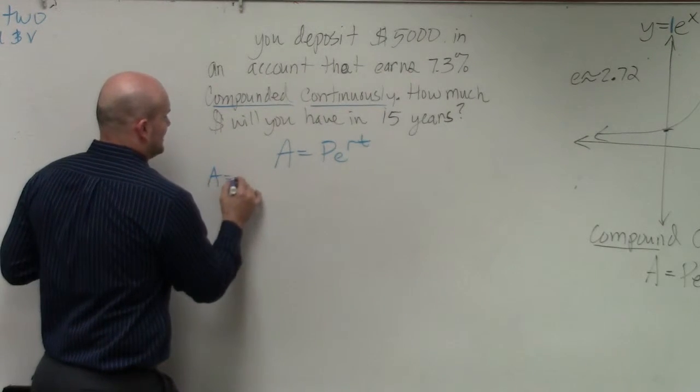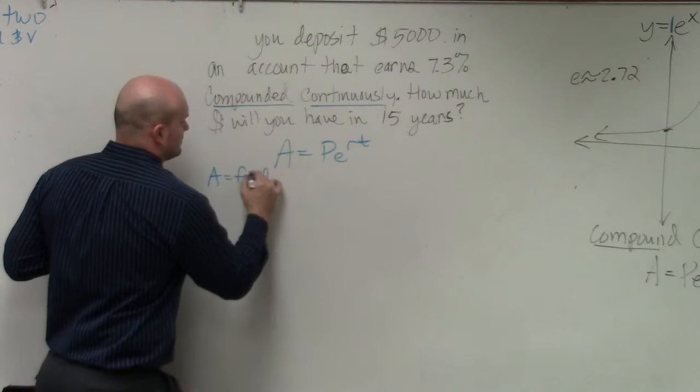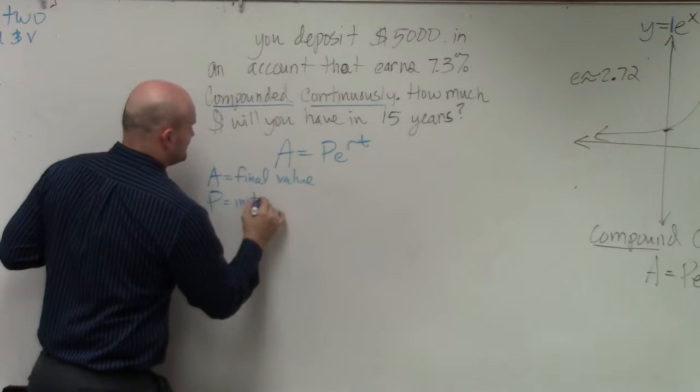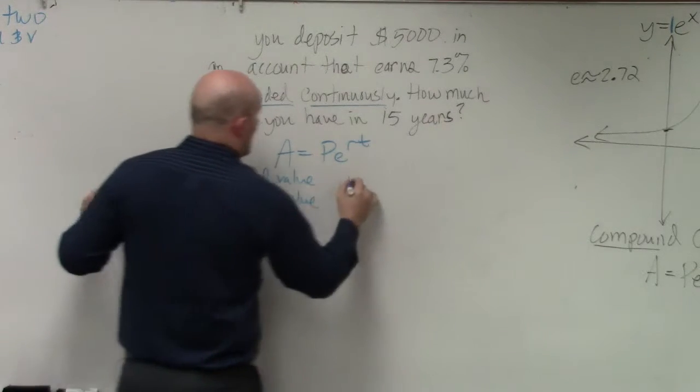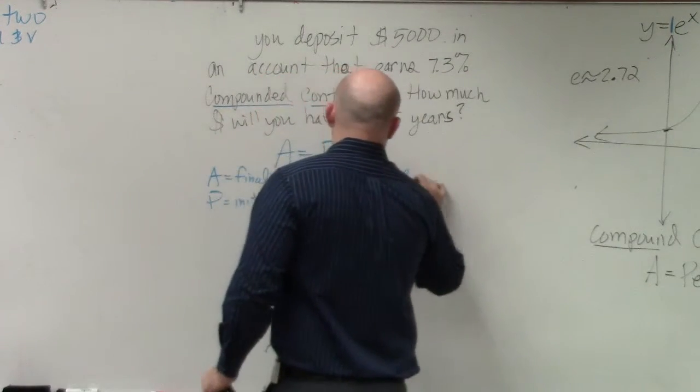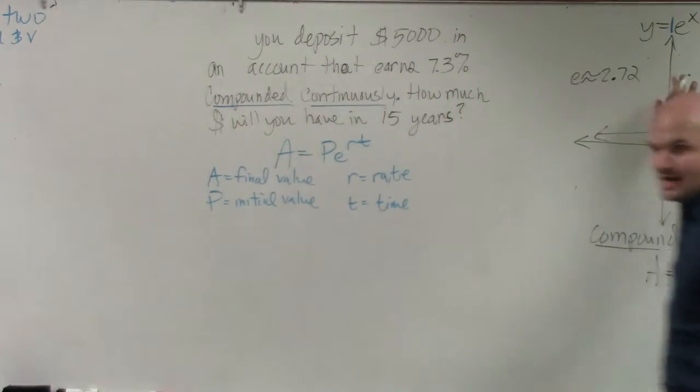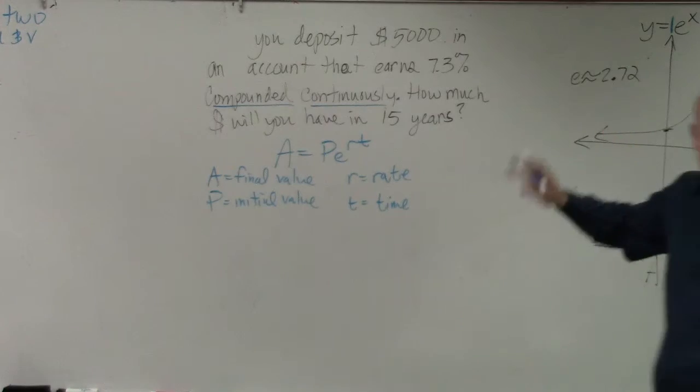So A is your final value, P is your initial value, r is your rate, and t is your time. Very similar to what we had over here, right? Just everything's in a little bit different format.